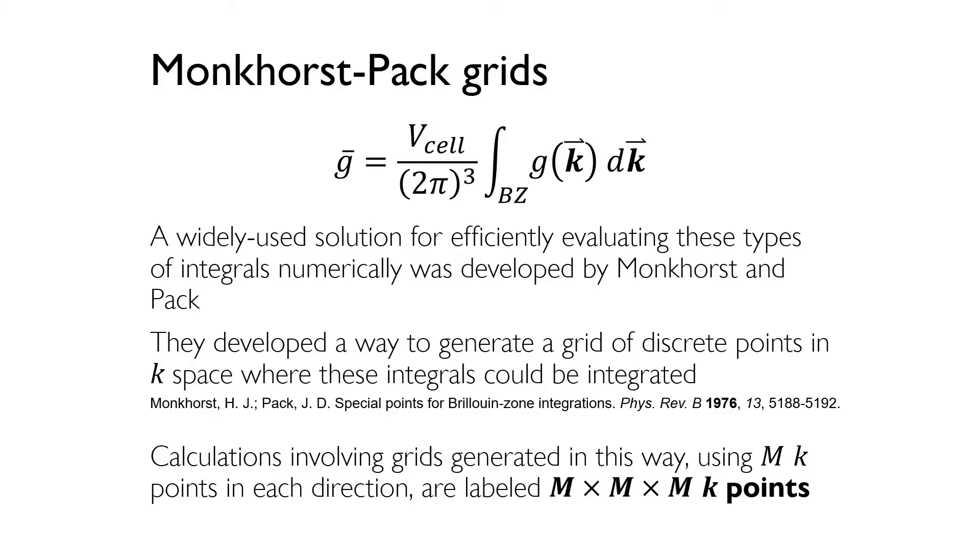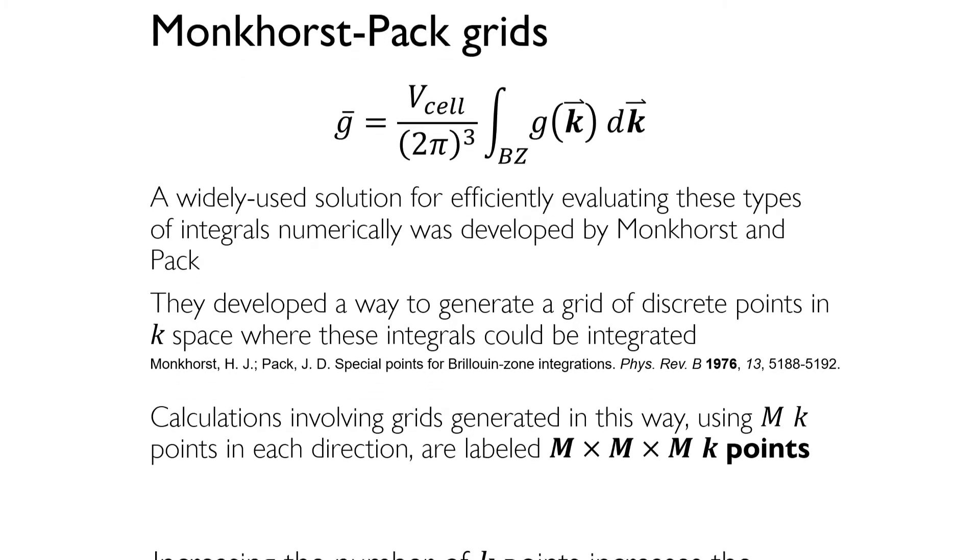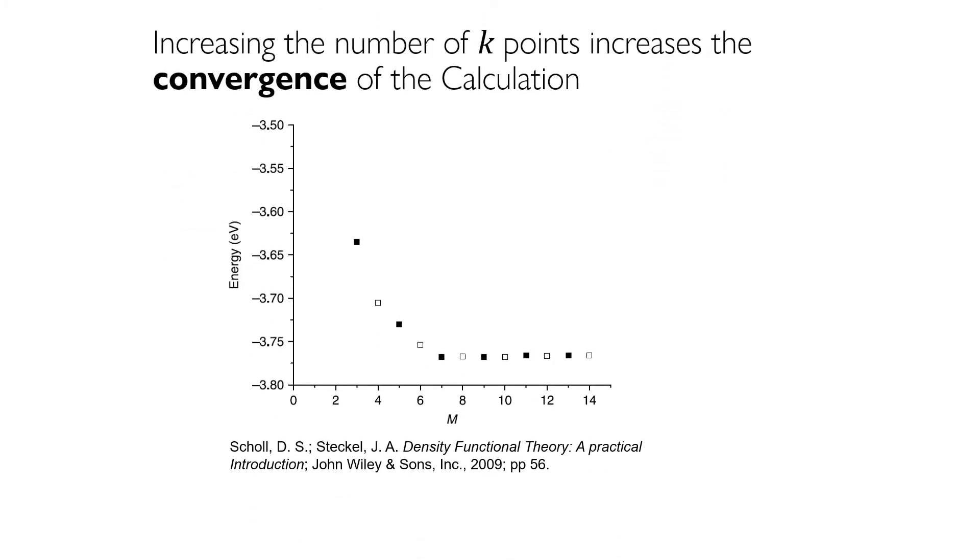When specifying the number of k-points used to generate the k-point mesh, say with m k-points in each direction, this should be described as a calculation performed using m by m by m k-points. From our earlier discussion on numerical approximations, it should be obvious that the more k-points you use, meaning a denser k-point mesh, the better converged your calculation will be. You can see the evidence for this in the plot of the total energies per atom of bulk FCC copper as a function of m for calculations performed using m by m by m k-points. The trade-off, however, is that the more k-points you use, the more costly your calculation becomes. The ideal number of k-points required to reach convergence is not something one can usually be certain of beforehand. It's therefore important that you determine the number of k-points required to reach convergence for each new system that you work with.